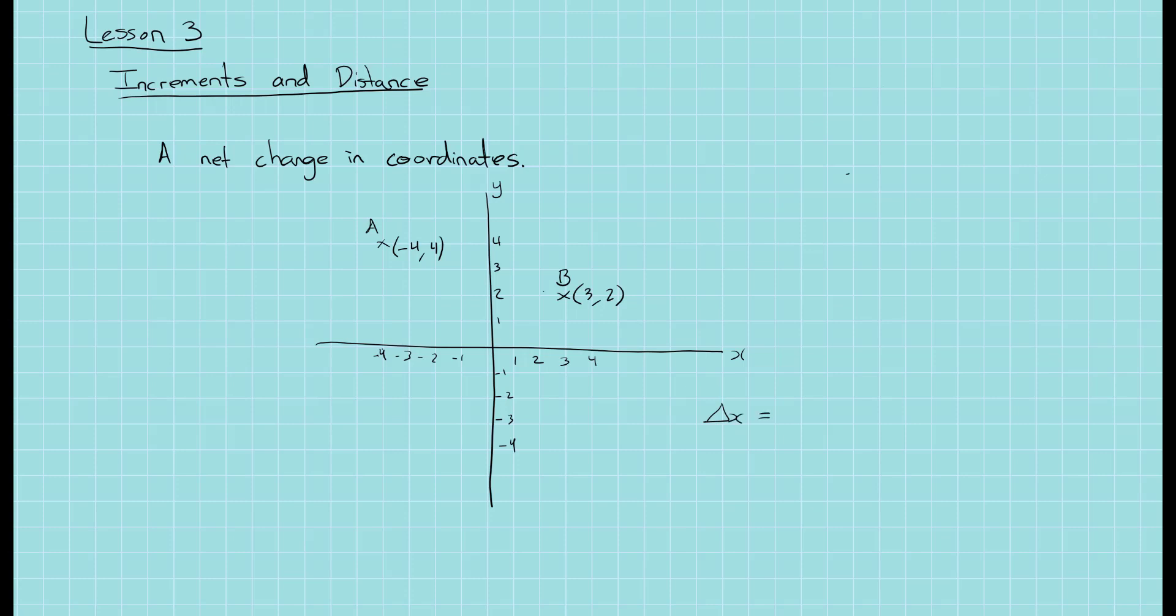That is equal to 3 minus negative 4, which is actually 7. And delta y is 2 minus 4, which is minus 2.